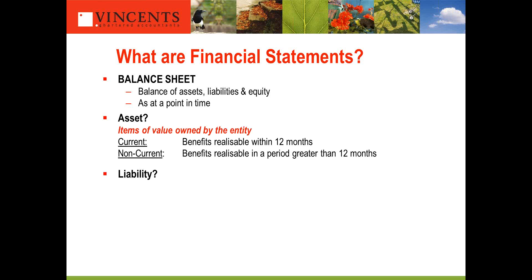An asset is an item of value owned by the entity. There's a distinction between current assets and non-current assets. A current asset is one where you'll normally realise the benefit within 12 months — things like debtors, work in progress, and inventory or stock. You'll hopefully convert all those into cash within 12 months. Non-current assets are things such as plant and equipment, where you'll derive benefit over a period greater than 12 months.